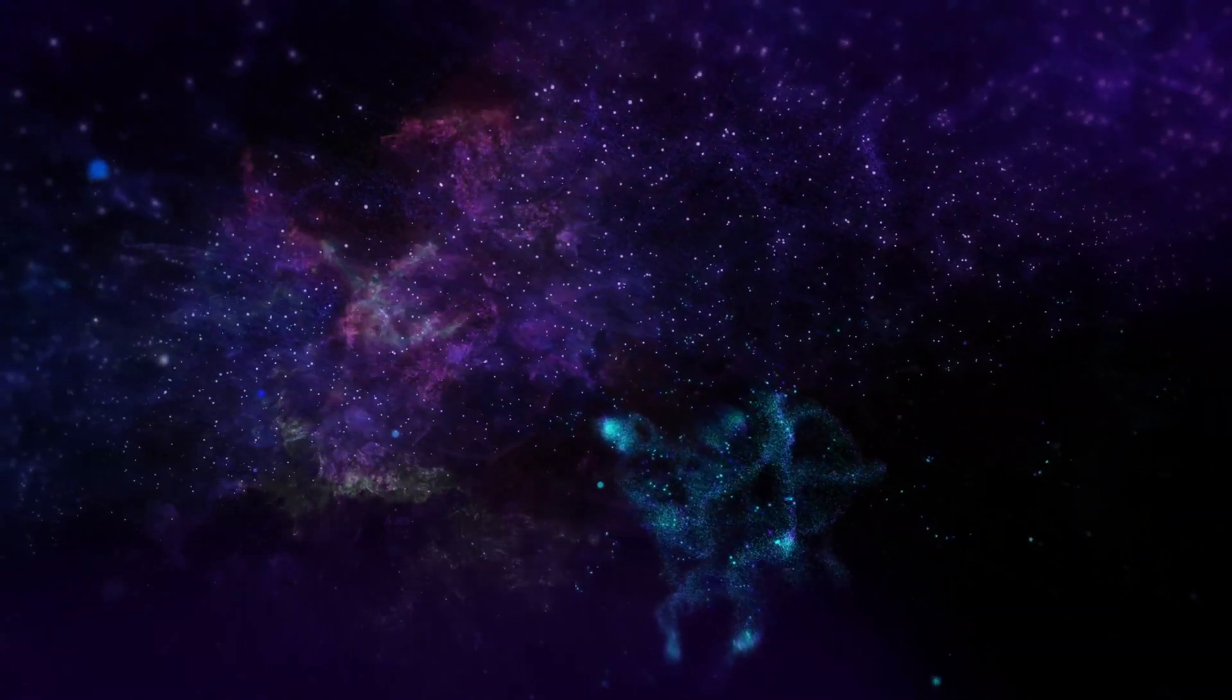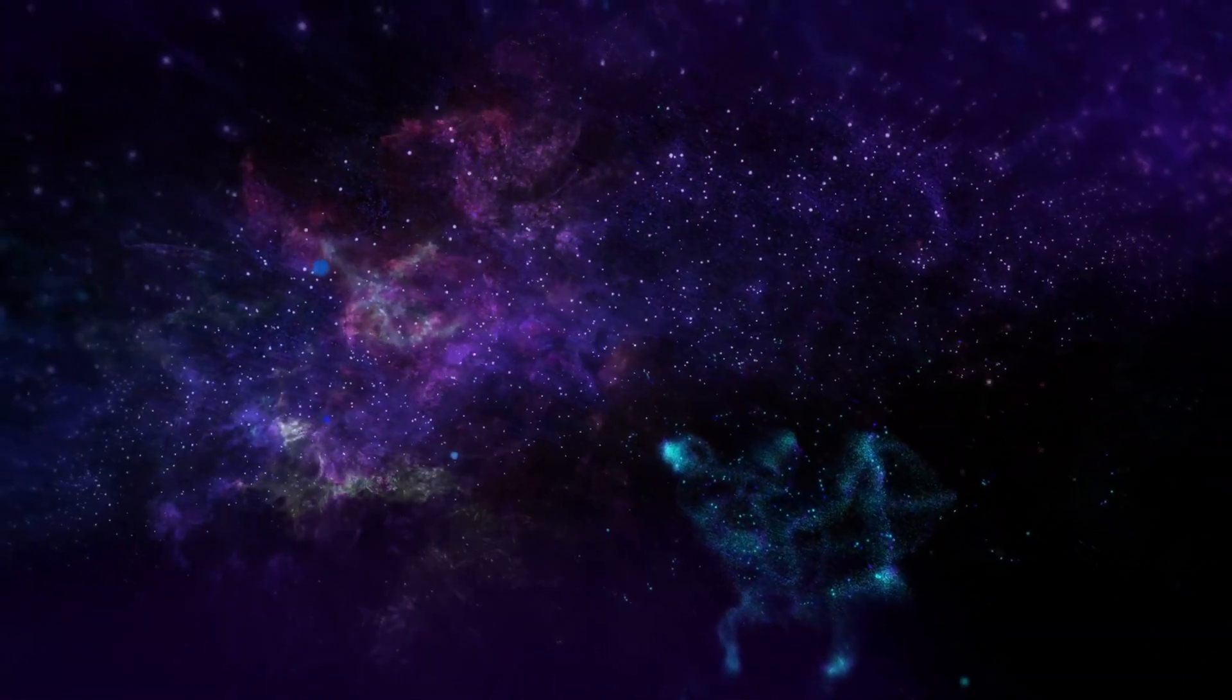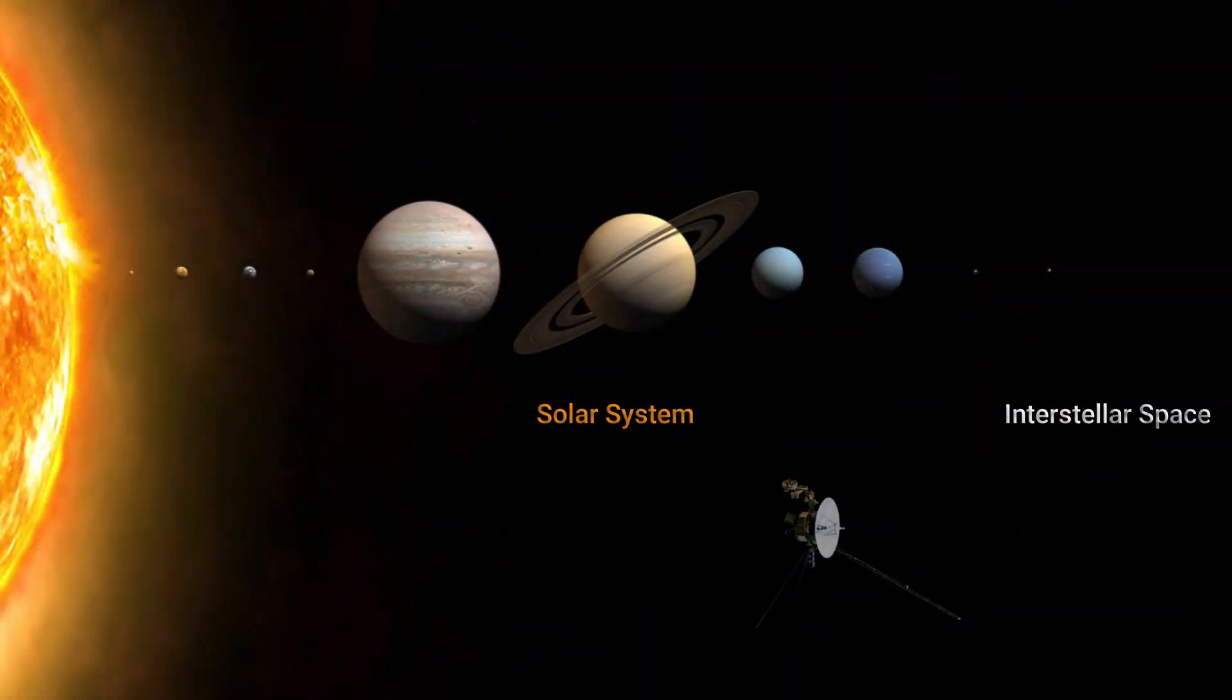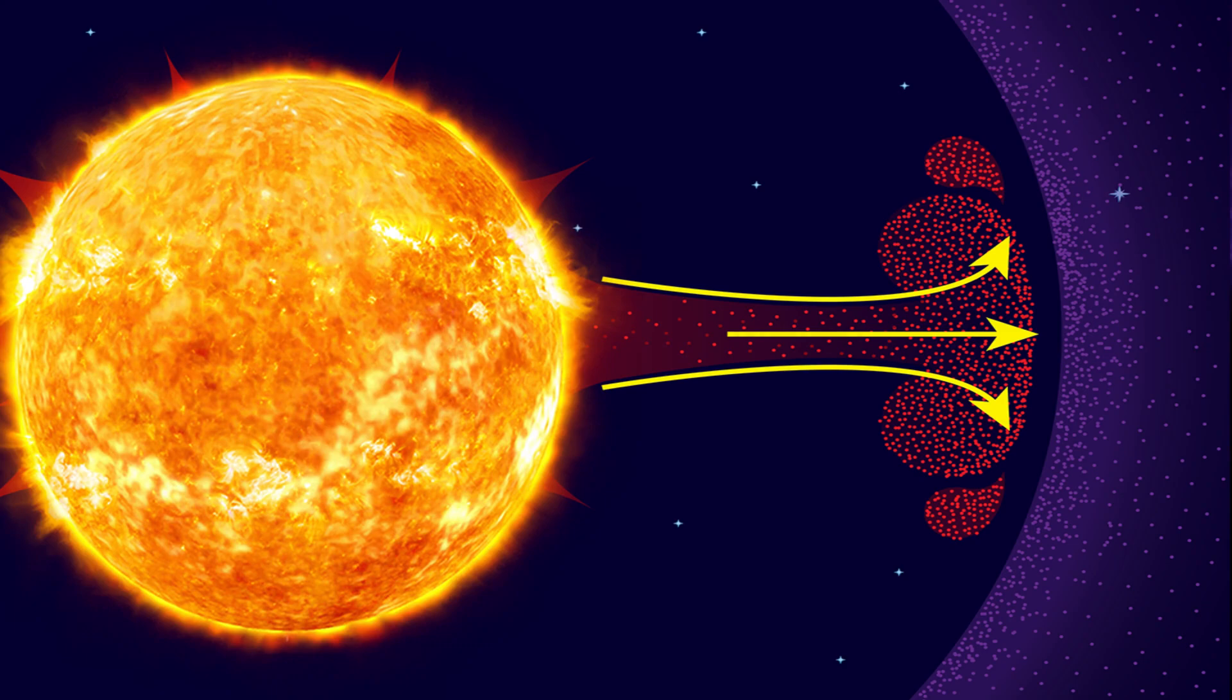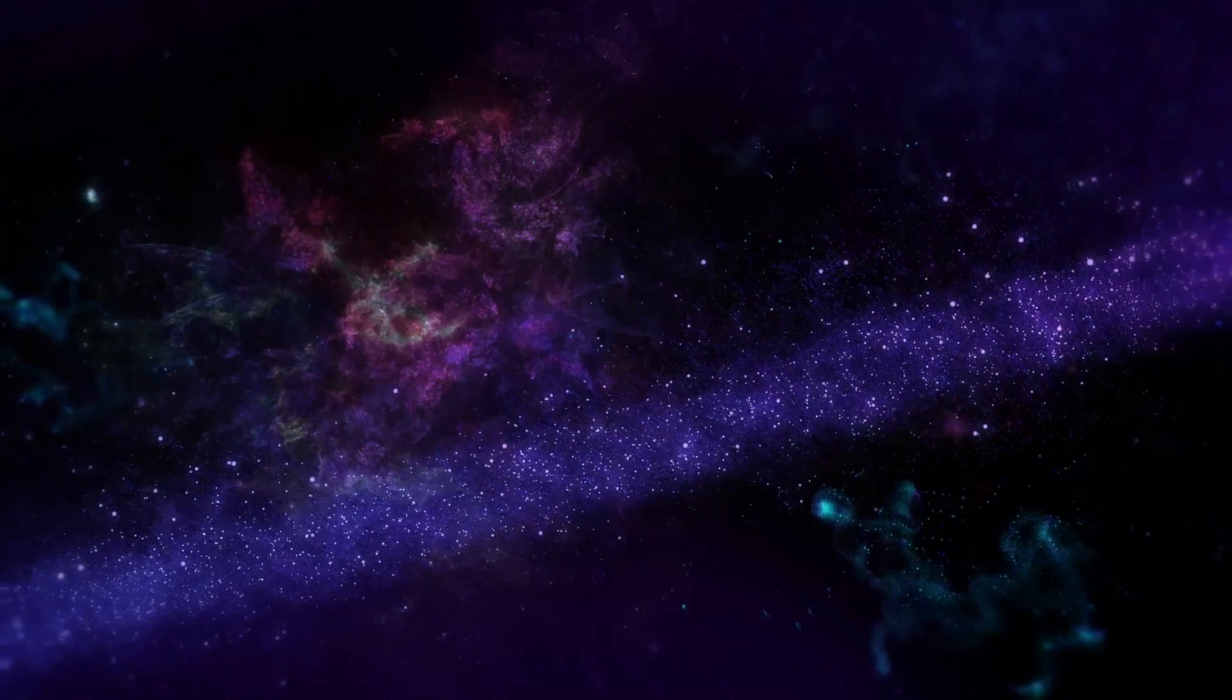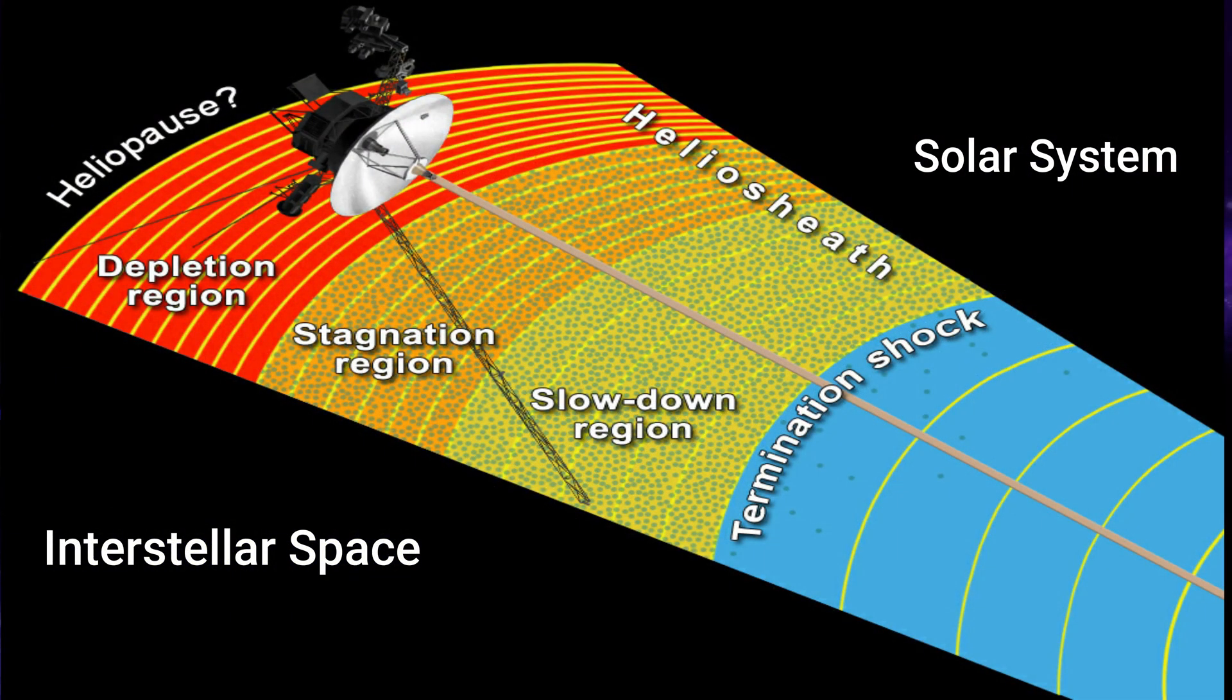Another NASA space probe, Voyager 2, reached interstellar space in November 2019. When something travels out of the solar system like Voyager 1 and Voyager 2, the solar wind slows to subsonic velocity at the termination shock. In the region beyond the termination shock, called the heliosheath, interstellar matter reacts with solar wind.